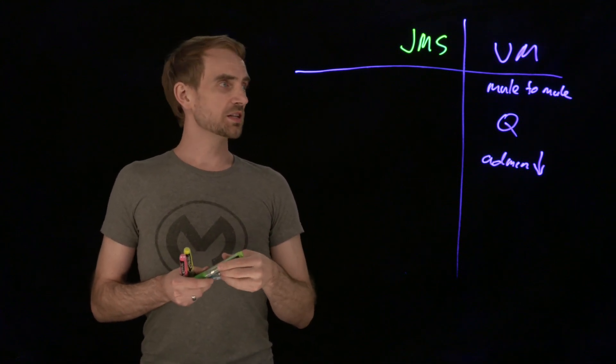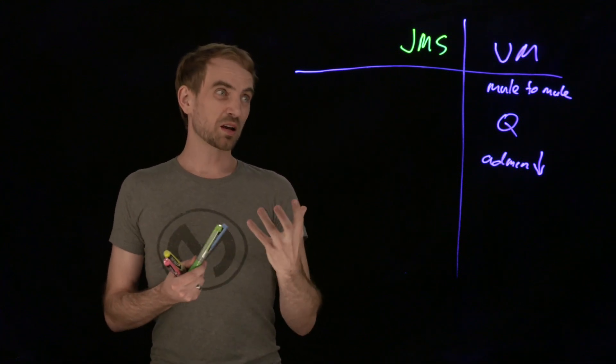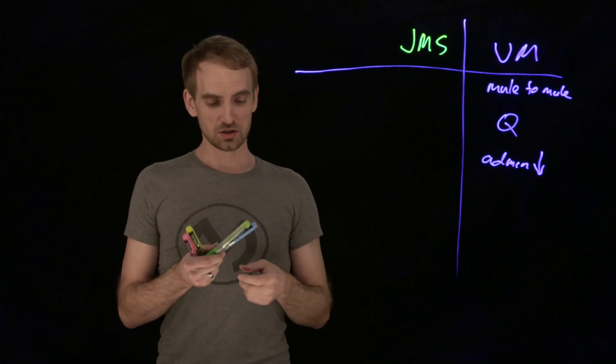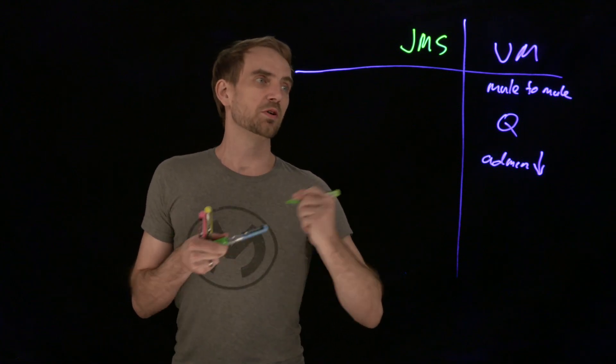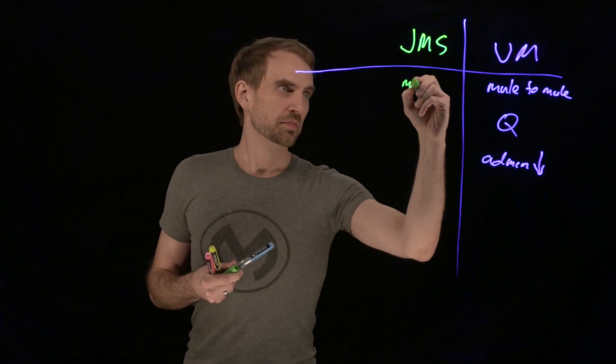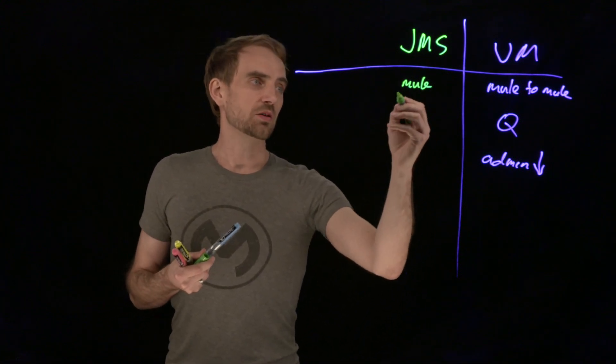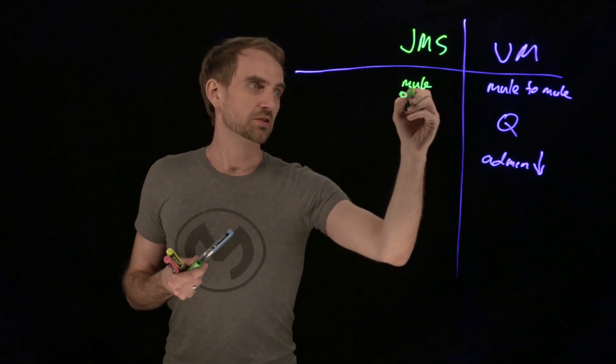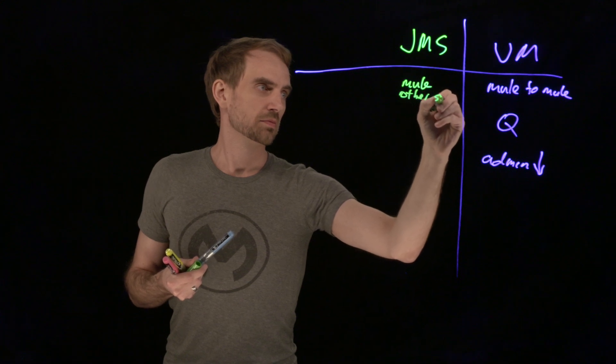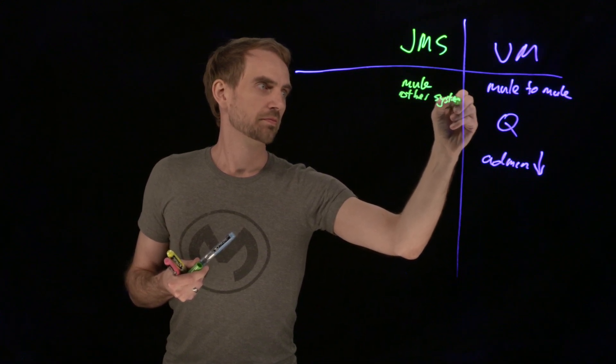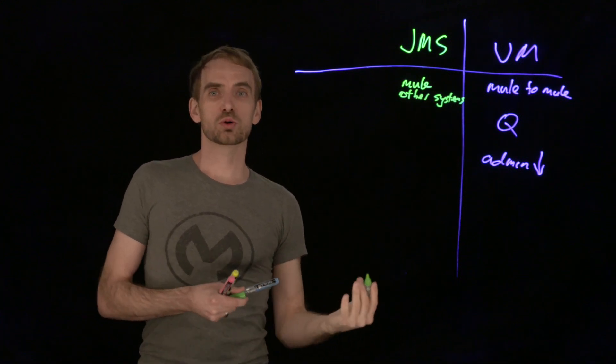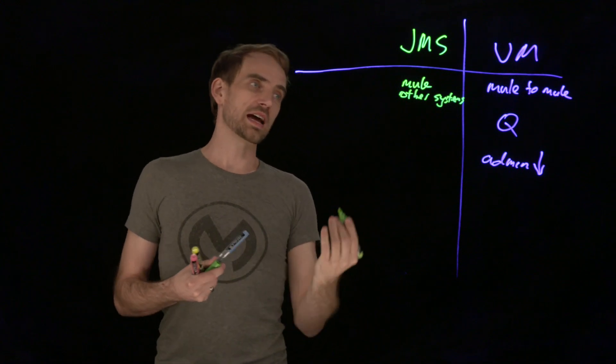As far as the JMS connector, when we're going through that, we're going to an external messaging provider. So, we've got the option of going mule as a consumer or a publisher and we've also got others. Other systems could listen for that message and respond to it.